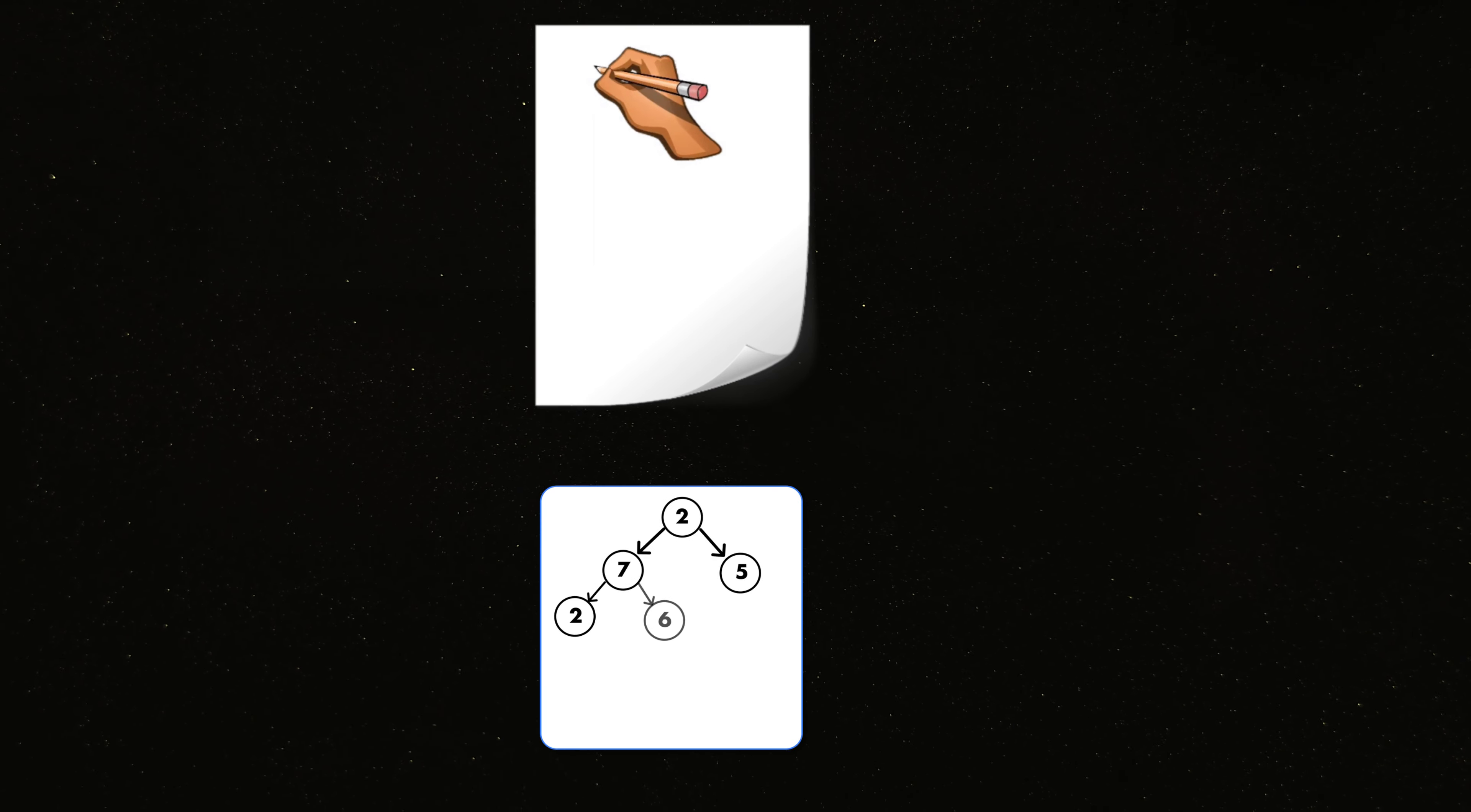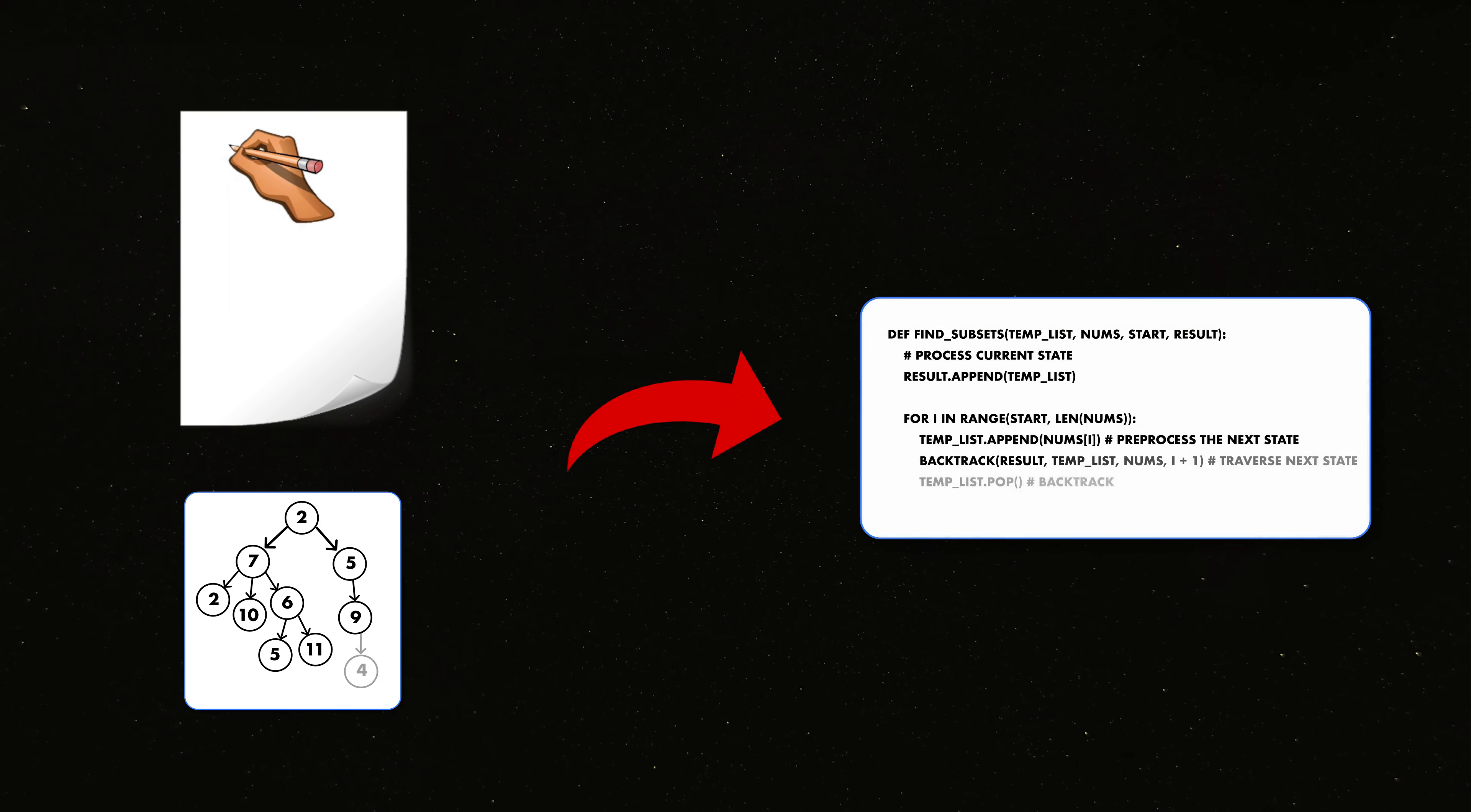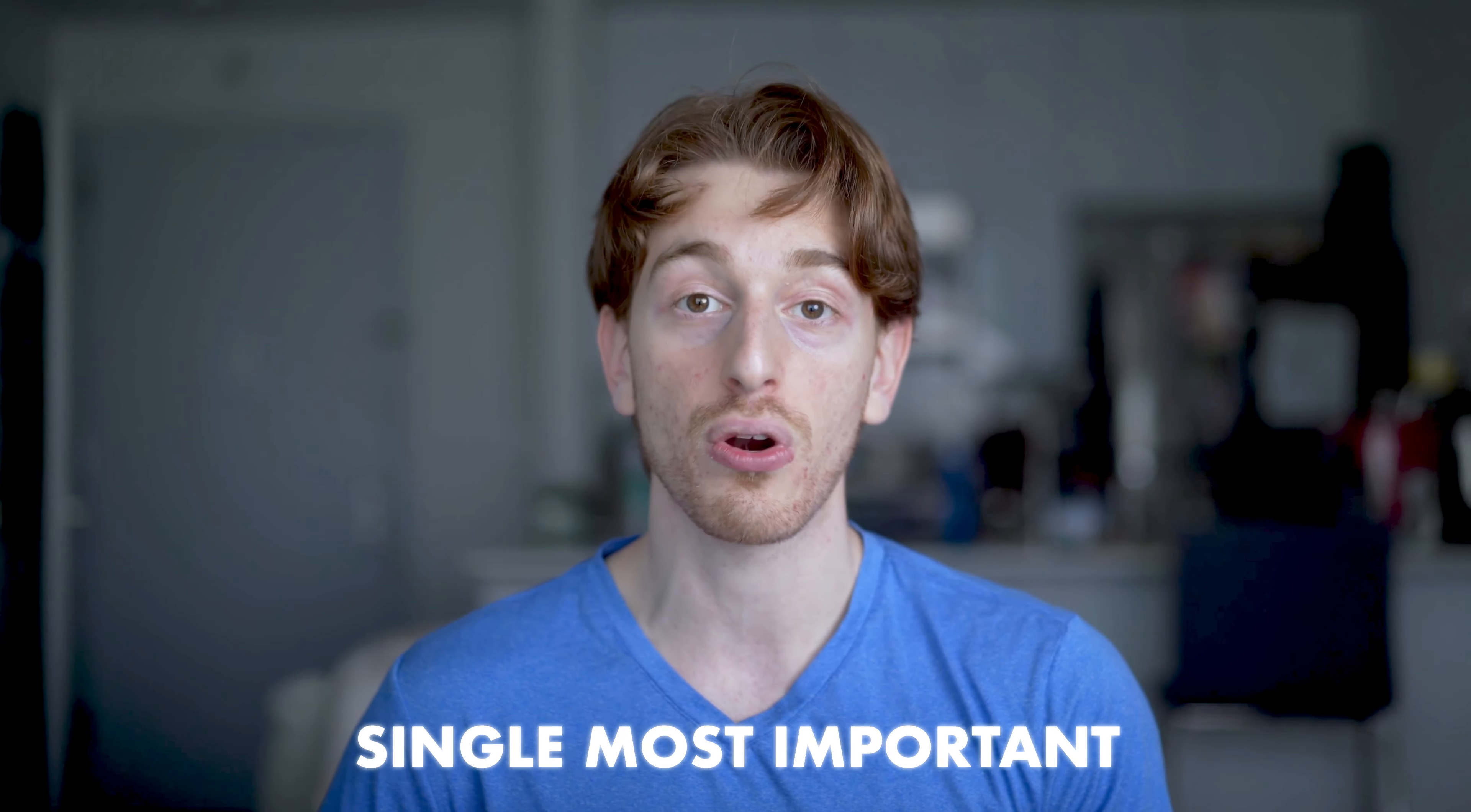The more you build decision trees with pen and paper, the faster you're going to build intuition and solve questions because you will start getting used to identifying what your recursive solution should look like based on the tree you wrote down. This is the single most important thing to get good at recursion and backtracking, but also to build a foundation for trees and graphs since usually questions for these data structures are solved recursively.